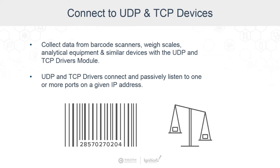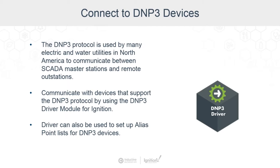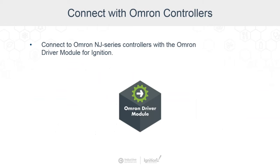Going a little further into this: DNP3 is a protocol used by many electric and water utilities in North America. It's used to communicate with SCADA master stations and remote outstations. If your organization uses devices that support the DNP3 protocol, you can communicate with them by using the DNP3 driver module for Ignition, and you can also use it to set up alias point lists for those devices. Connect to Omron NJ series controllers with the Omron driver module for Ignition. The Omron NJ controllers are used in the Sysmac automation platform.